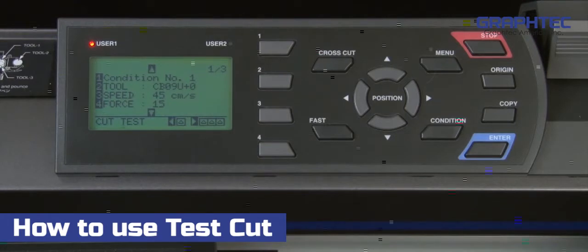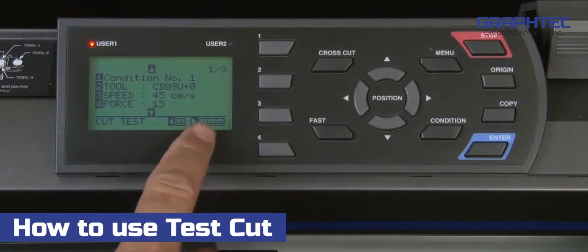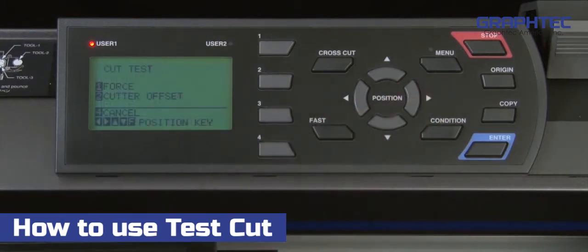As mentioned, the right arrow key will cut 3 patterns. Once this is pressed, this menu appears, allowing us to check force or offset. In most cases, force is the choice.